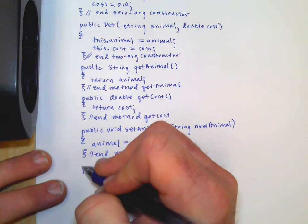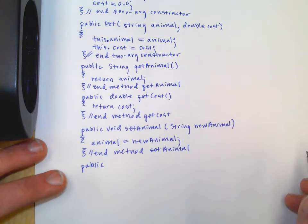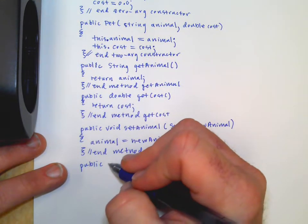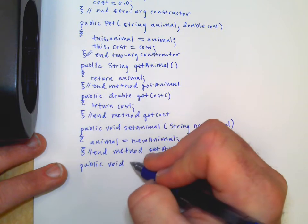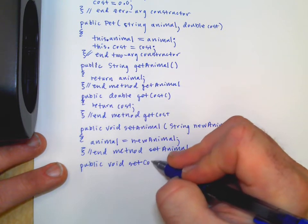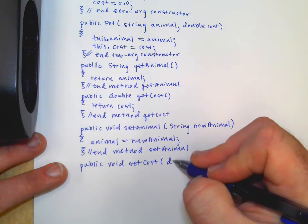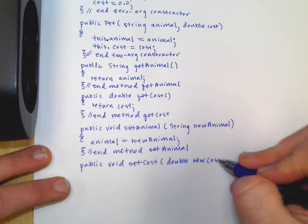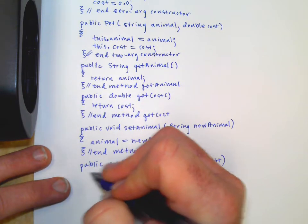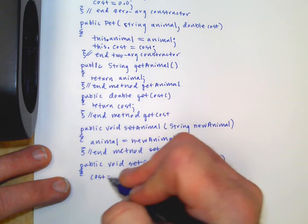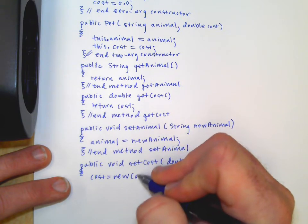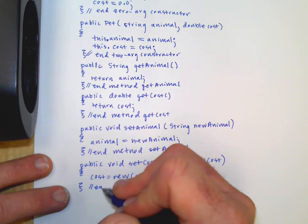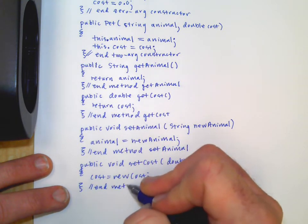Now we can do one for the cost also. I mean, you're not going to necessarily have to do this, but this is stuff that you might have to do or stuff that might be in the code that they give you. And it's just really good to totally understand what these things are. Set cost double new cost cost equals new cost end method set cost.